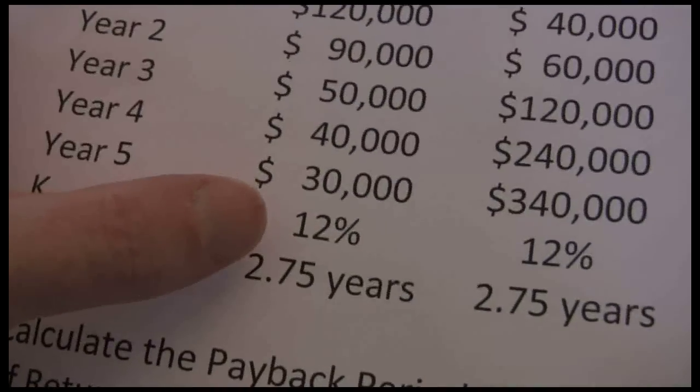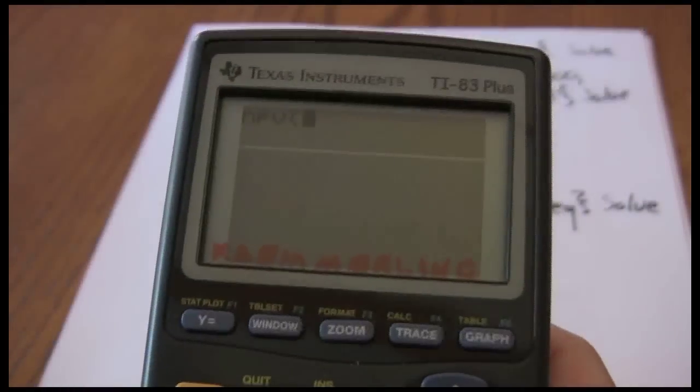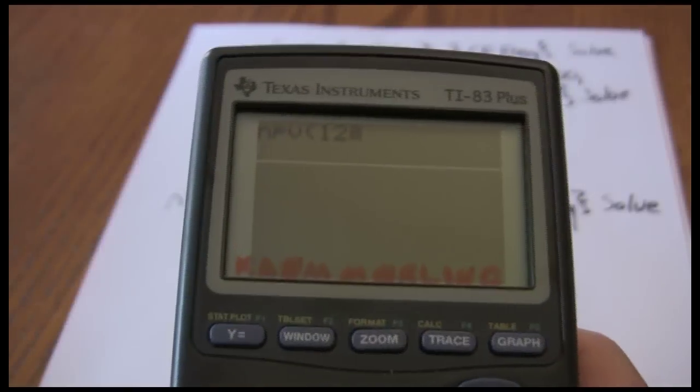My discount rate is where I'm starting. That's the 12%, so 12 comma.